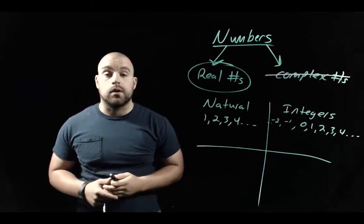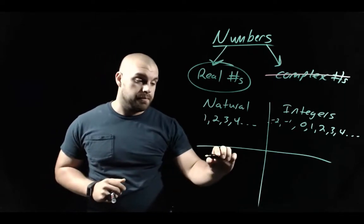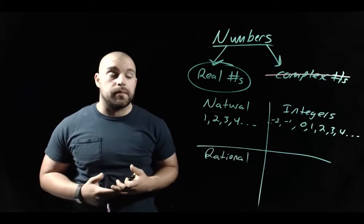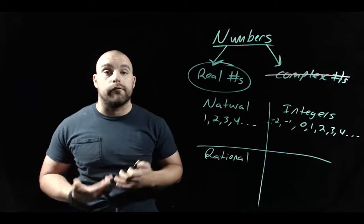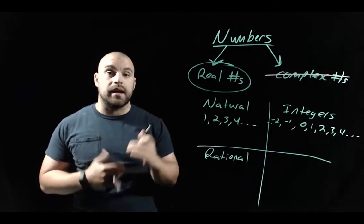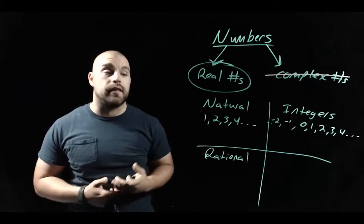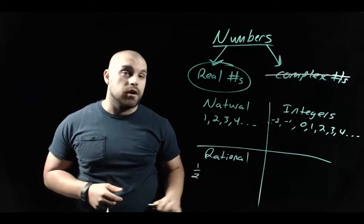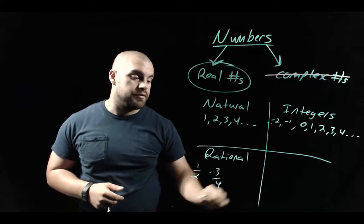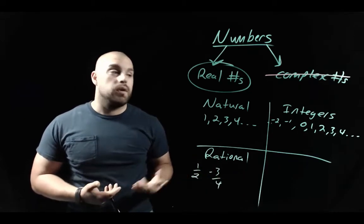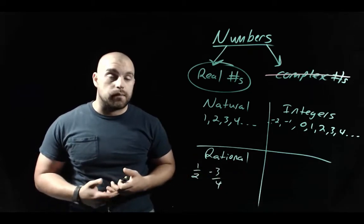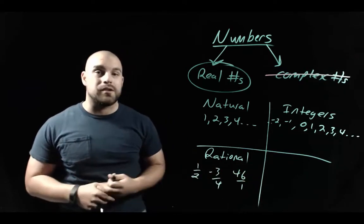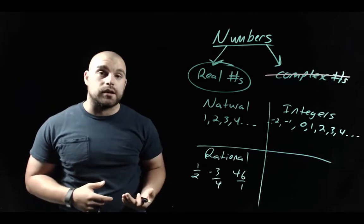The next set are the rational numbers. What people typically think about when talking about rational numbers are fractions — by taking two integers and making a ratio or fraction out of them. So something like one-half or negative three-fourths are rational numbers. Even integers can be represented as rational numbers by putting them over one, so 46 over one is a rational number.